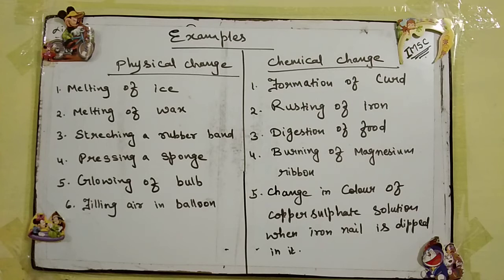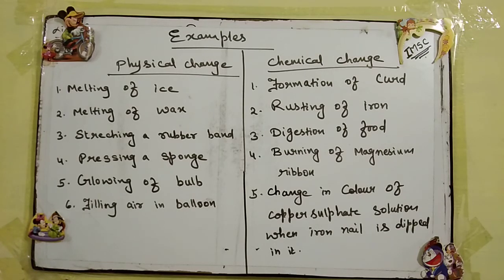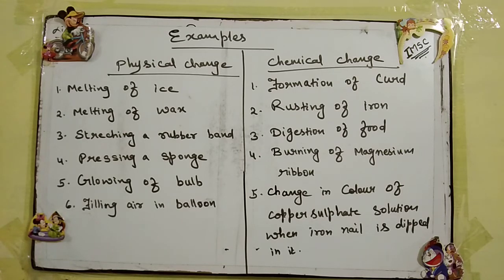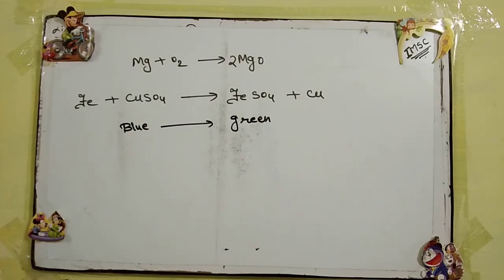Next comes burning of magnesium ribbon. When we burn magnesium ribbon, तो magnesium oxide बनता है. The equation is: Mg + O2 gives MgO — magnesium ribbon यदि burn करता है oxygen की presence में, तो magnesium oxide बनता है. Chemical reactions that you will study in higher classes in detail.